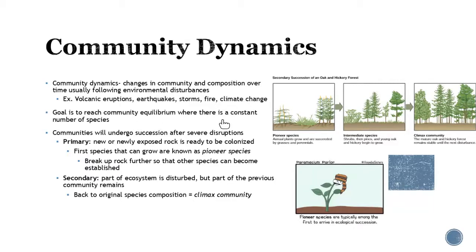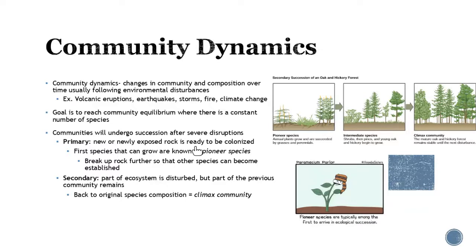The goal is to reach community equilibrium — a stable number of species — but when that doesn't happen, you need to think about what's going wrong. After a severe disruption, pioneer species come in first. These are species that can thrive in harsh areas, like new exposed rock from a volcanic island. Pioneer species break up the substrate further so other species can become established. Once those get going, you'll see intermediate and secondary species, the ecosystem spreads, and eventually you reach a climax community with a lot of diversity. That wraps up this chapter.